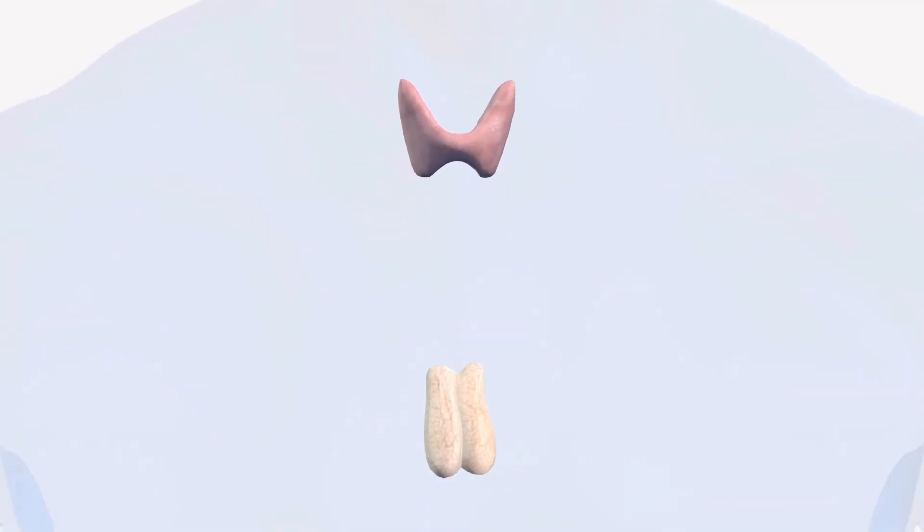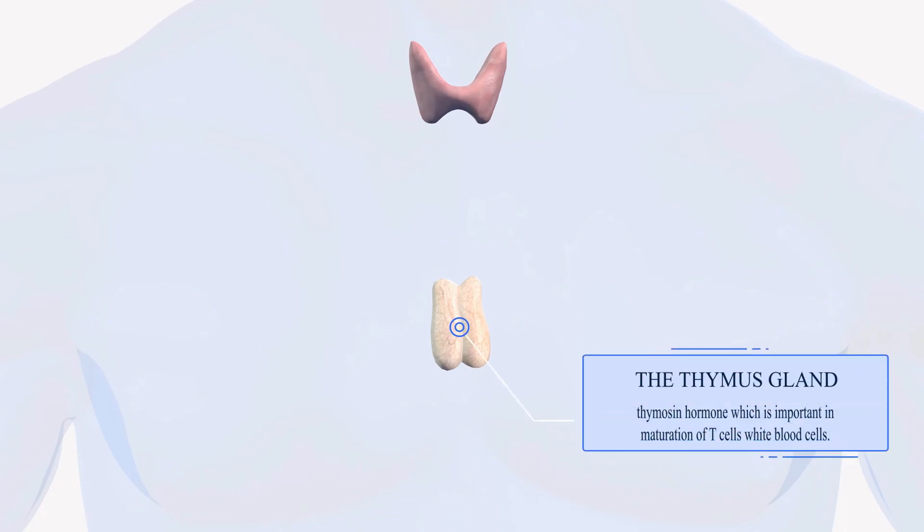Now right below the thyroid gland we have another endocrine gland known as the thymus gland. Now the thymus is not really a big deal in the endocrine system but it is a big deal in the immune system world. But in endocrine world the thymus actually undergoes atrophy during adulthood and it begins secreting thymosin hormone, which is important in maturation of T cells white blood cells.